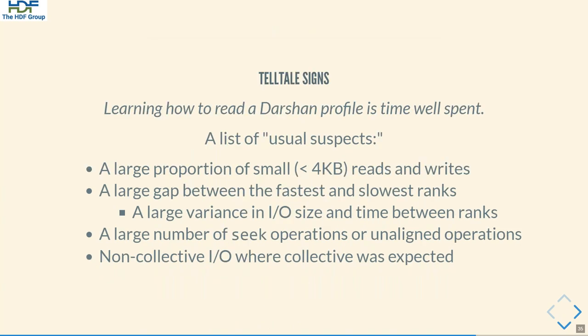Learning how to interpret and read profiling or tracing information — using Darshan as an example — is definitely time well spent. You'll put together your own list of usual suspects that, in 80% of cases when you see a profile, are the things you're looking for as first potential optimization targets. However, in maybe 20% of cases, that information is inconclusive; you don't find any usual suspects, and then you have to look at less aggregate, more detailed, more time-sequenced information — that requires more work, but that's the nature of the beast.